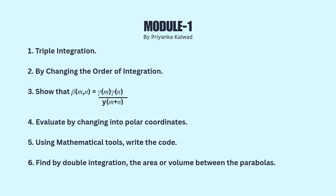In Module 1 we have six questions. First, you will get a question based on triple integration. Second, by changing the order of integration. Third, show that — this is one theorem; you can get different theorems from previous year question papers. Fourth, evaluate by changing into polar coordinates. Fifth, using mathematical tools, write the code — these codes are usually from your lab programs.